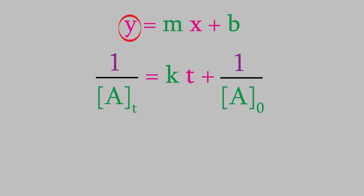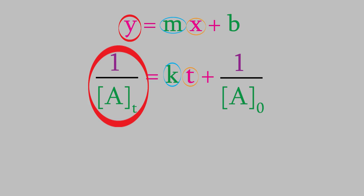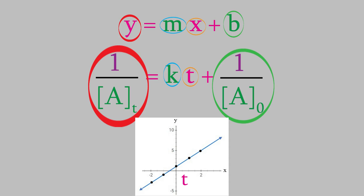Instead of y, the left side of the equation has 1 over at. On the right side, we have k, which is a constant just like m. Next, we have t instead of x. And finally, we have 1 over a0 instead of b. So this second order equation is similar in form to the equation for a straight line. That means if we have data for a second order reaction, we should be able to make a graph with time on the x-axis and 1 over at on the y-axis. That should give us a straight line with a slope equal to k and a y-intercept of 1 over a0.